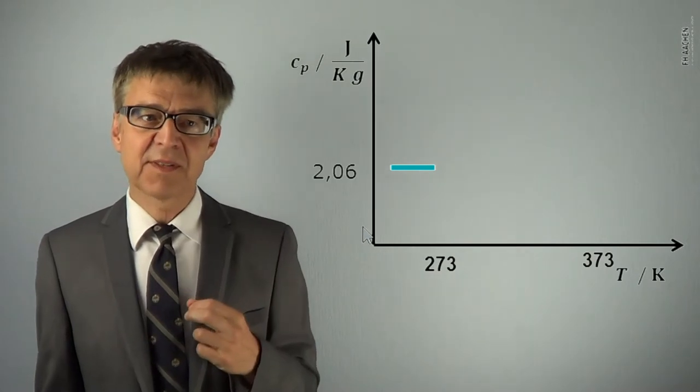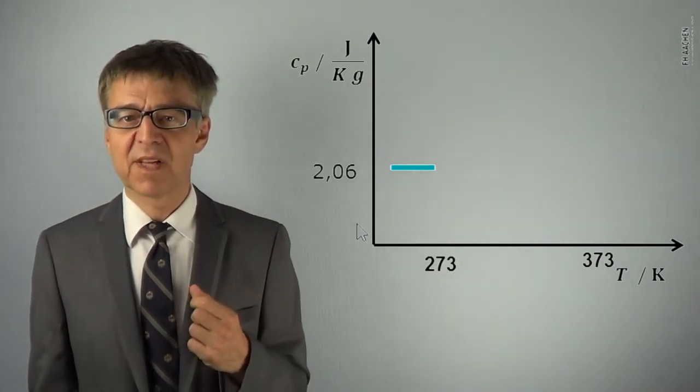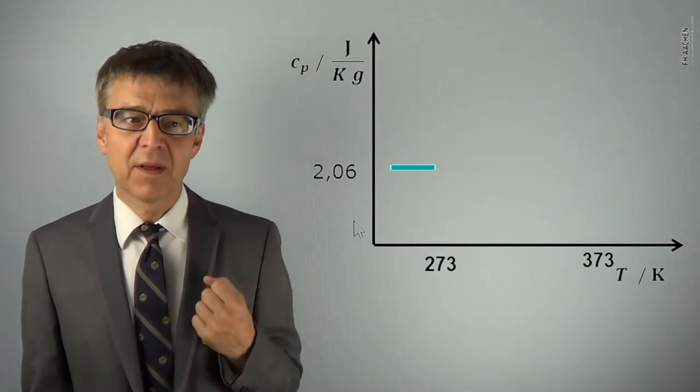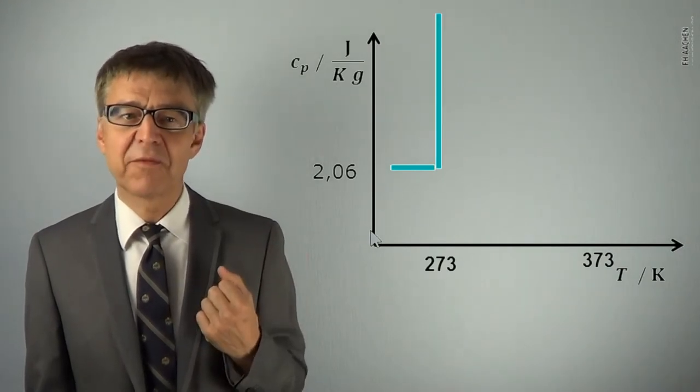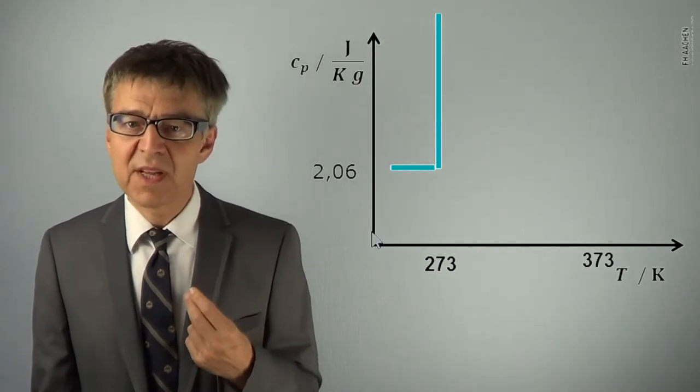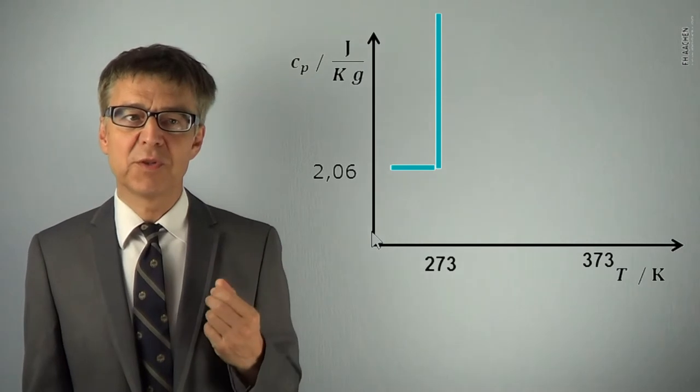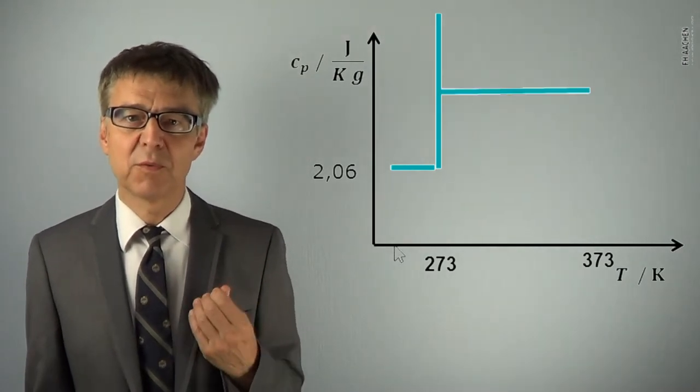As expected, there is a singularity at 273K. With latent heat, the heat capacity goes to infinity. Between 273 and 373K, the graph shows the constant heat capacity of liquid water, 4.18J per gram and Kelvin.